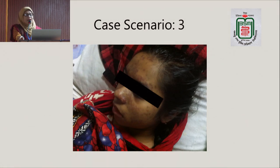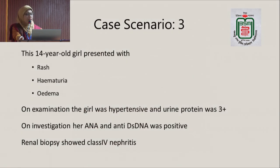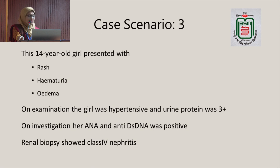The third case is a typical case of SLE with nephritis. She is a 14-year-old girl who presented with rash, hematuria, and edema. The girl was hypertensive and bedside urine albumin was 3+. She was ANA and anti-dsDNA positive, and her renal biopsy typically showed class 4 nephritis.